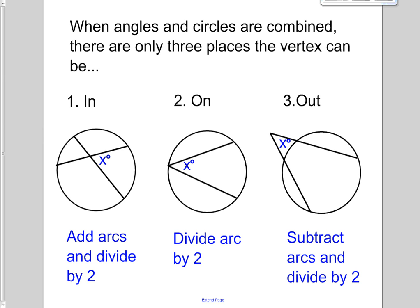You've either got the situation where the vertex of the angle is inside the circle like it is right here, or you have it where the vertex is on the circle like it is right here, or you have the vertex on the outside of the circle.